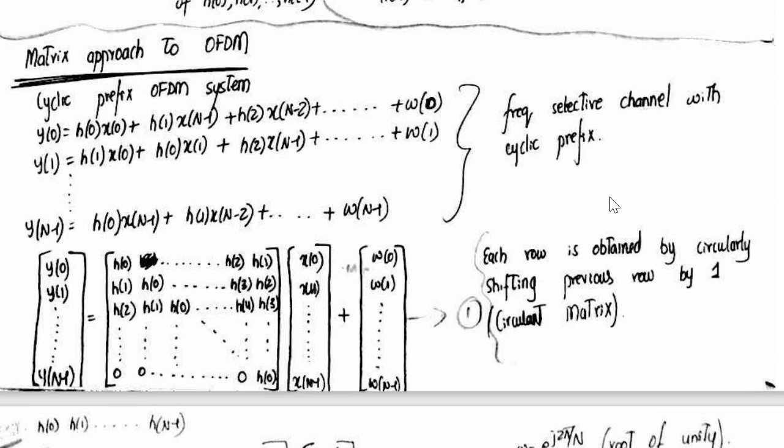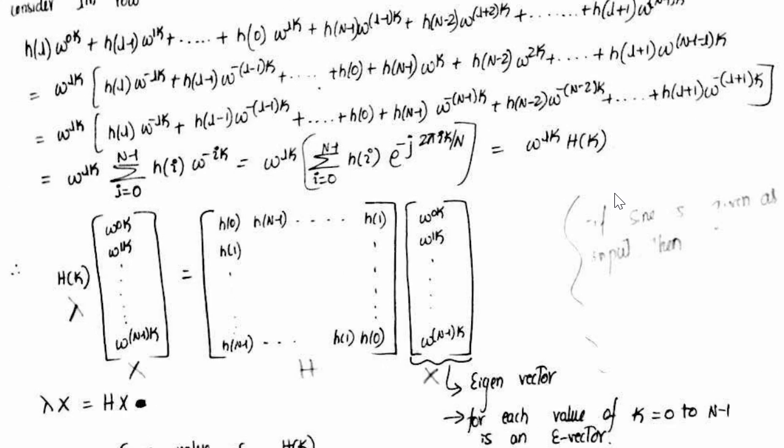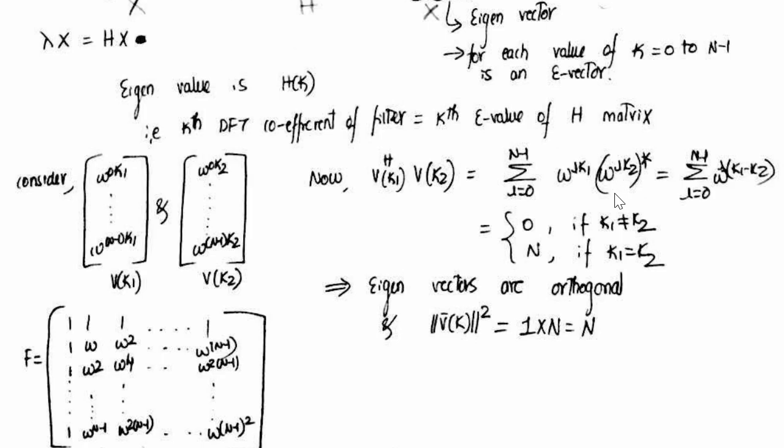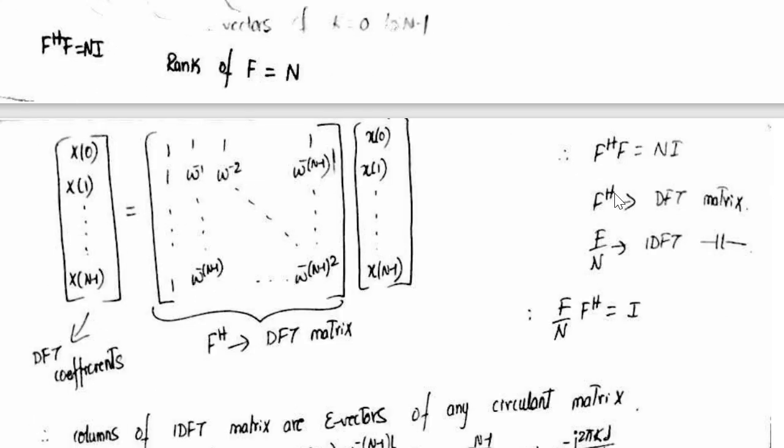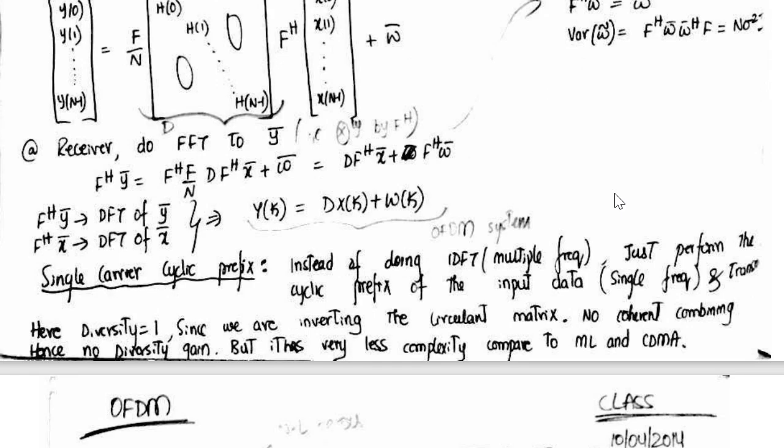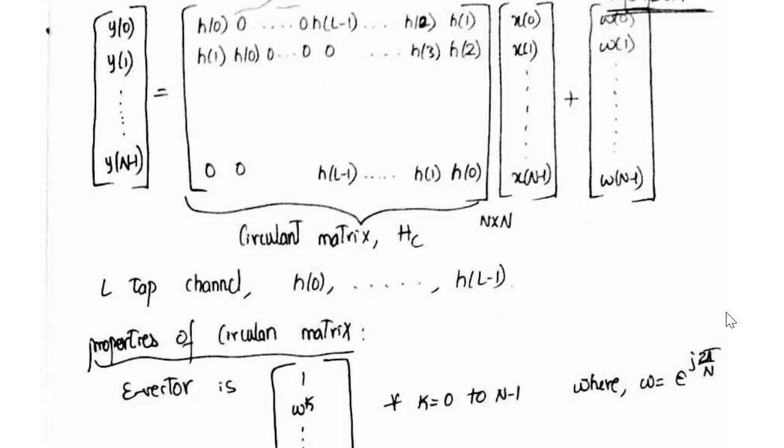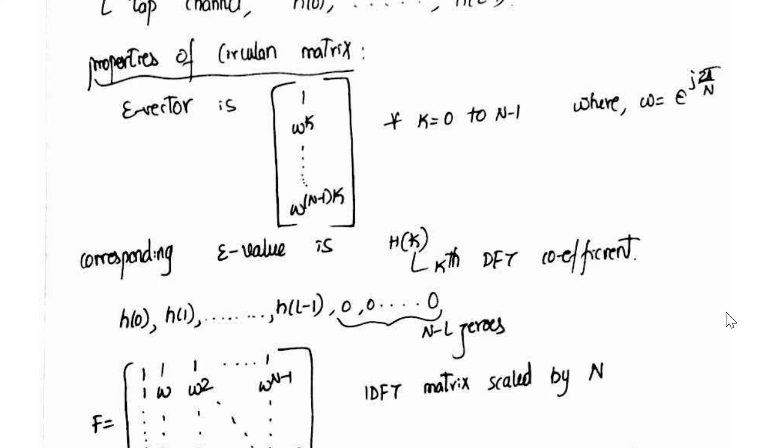Now we are entering into the matrix approach to OFDM to simplify the things, to simplify the operations or to simplify the calculations. The matrix approach has been taught and is explained from this point onwards. In the OFDM matrix equation, the channel matrix with IDFT and DFT is converted into circulant matrix HC. Actually with the properties of the circulant matrix it is possible to convert to N parallel flat fading channels.